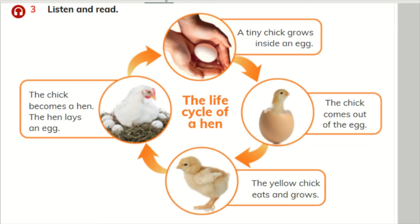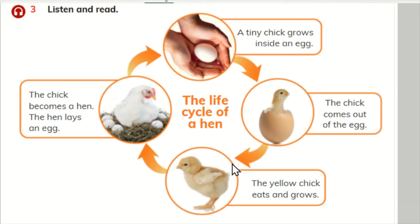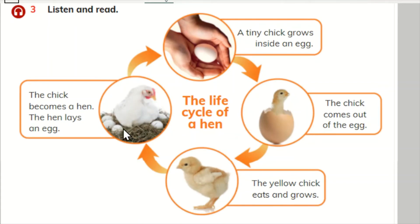Track 59: The life cycle of a hen. A tiny chick grows inside an egg. The chick comes out of the egg. The yellow chick eats and grows. The chick becomes a hen. The hen lays an egg.